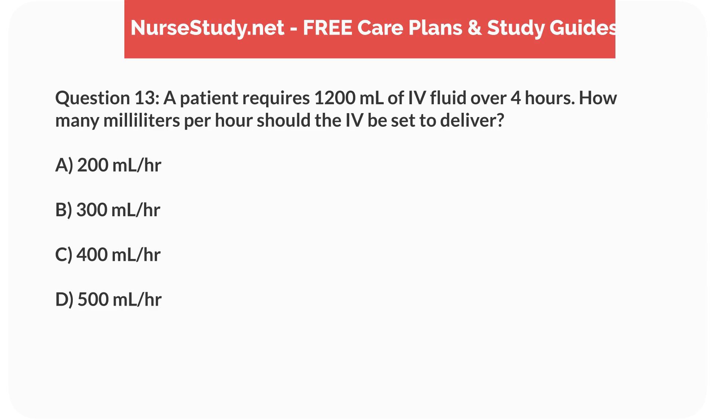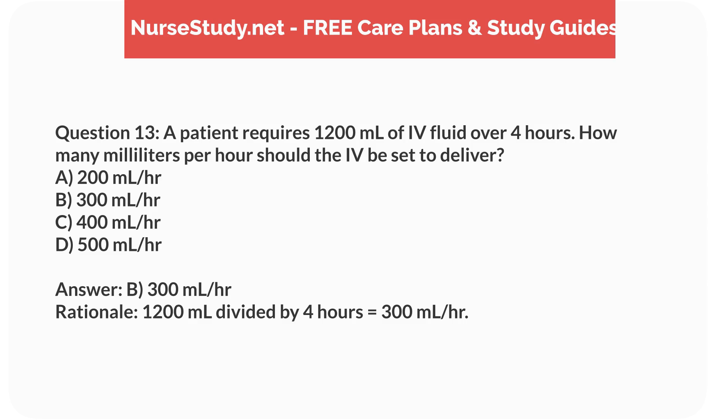Question 13. A patient requires 1,200mL of IV fluid over 4 hours. How many mL per hour should the IV be set to deliver? a. 200mL per hour, b. 300mL per hour, c. 400mL per hour, d. 500mL per hour. Answer: b. 300mL per hour. Rationale: 1,200mL divided by 4 hours equals 300mL per hour.